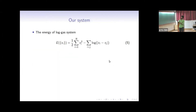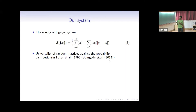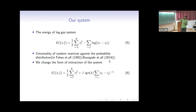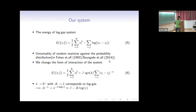In our project, what we did was change the form of the interaction. Instead of the logarithmic interaction, we changed it to the form 1 over |x_i minus x_j| to the power k — a large class of models. The k tends to 0 limit is actually the log gas limit. We want to calculate the spacing distribution for this model.